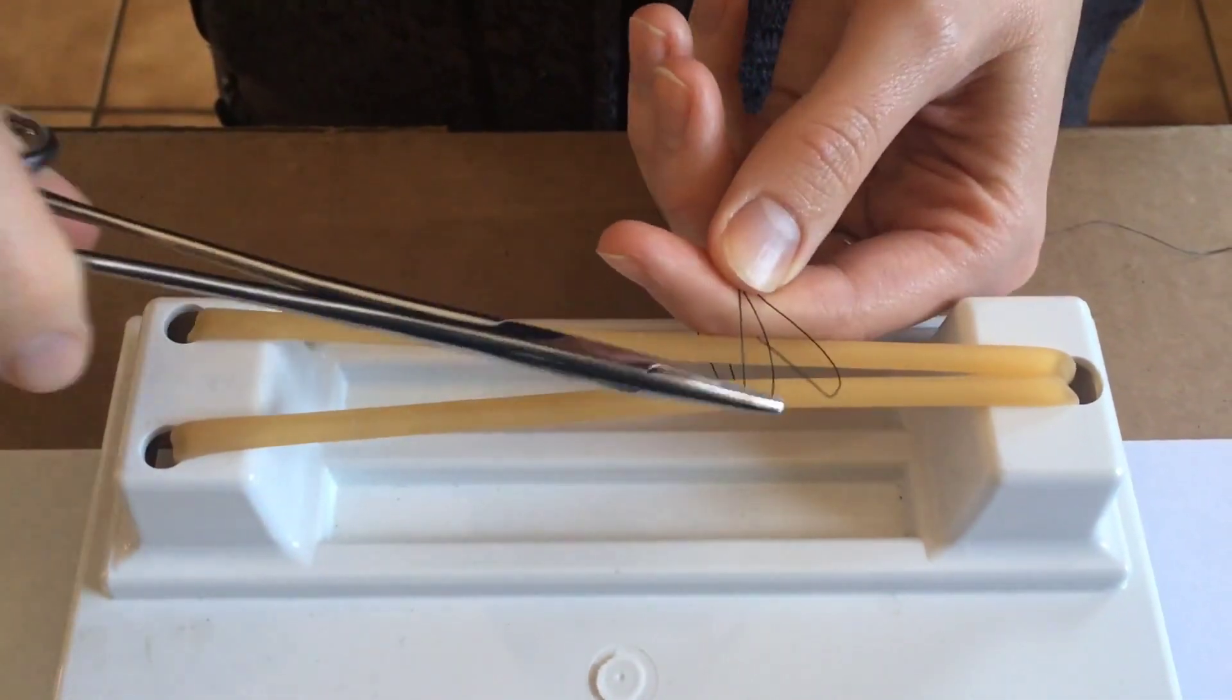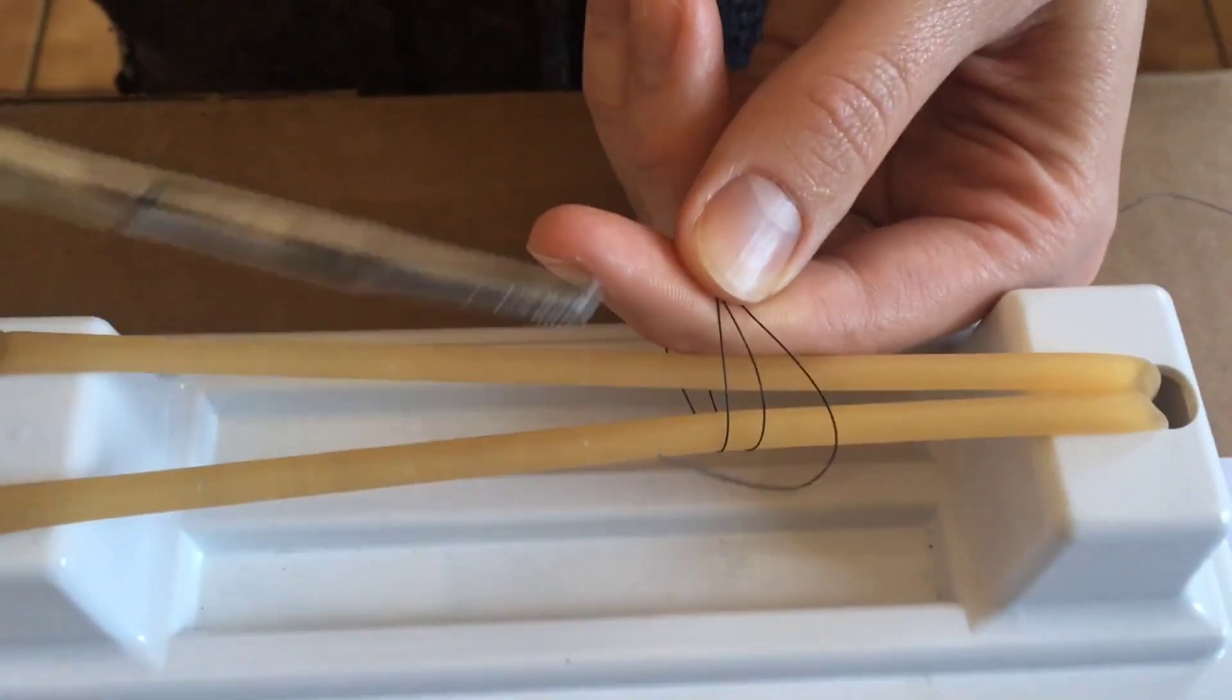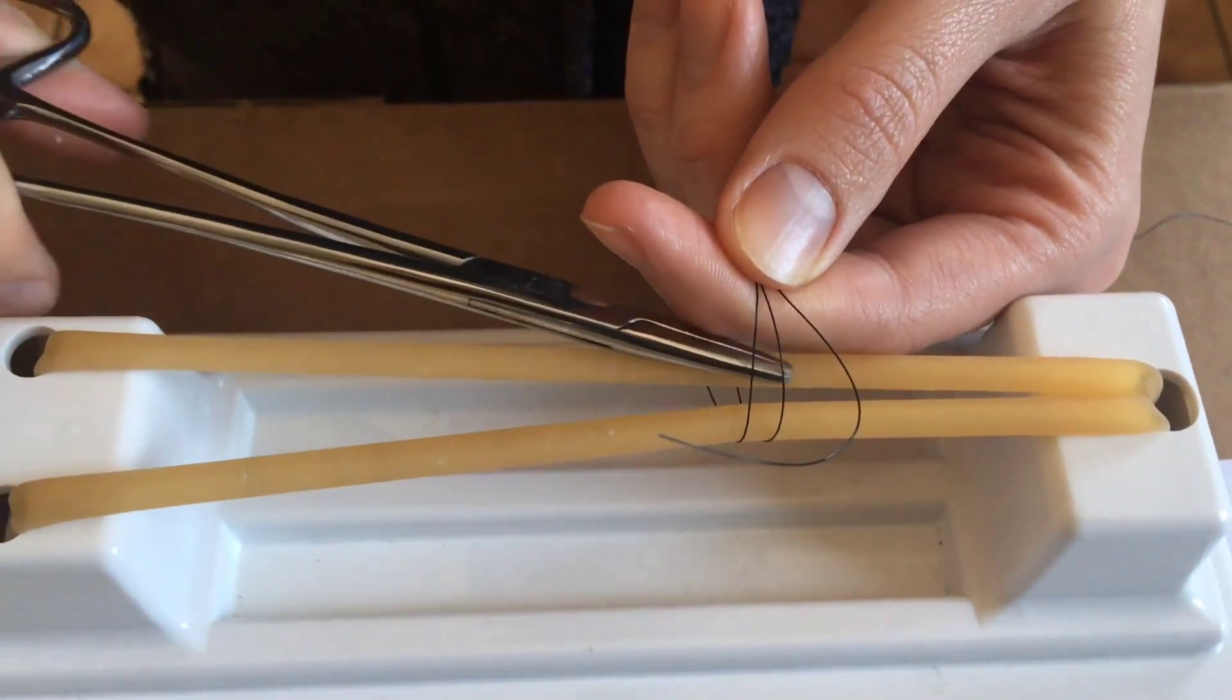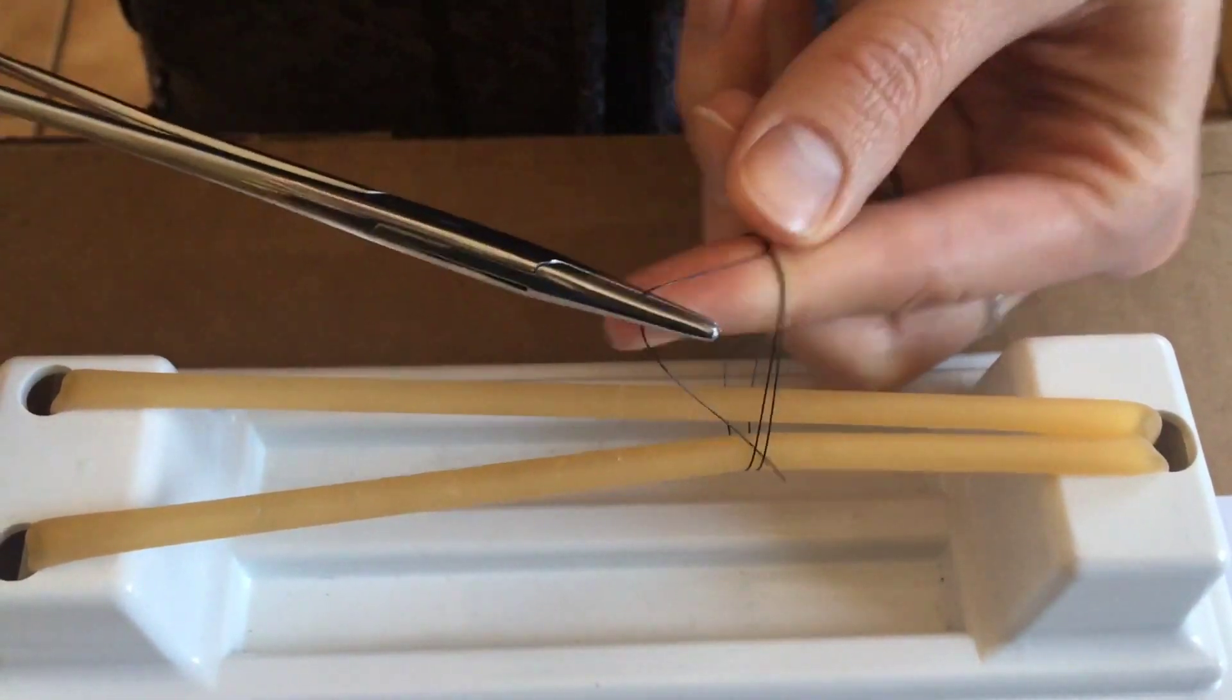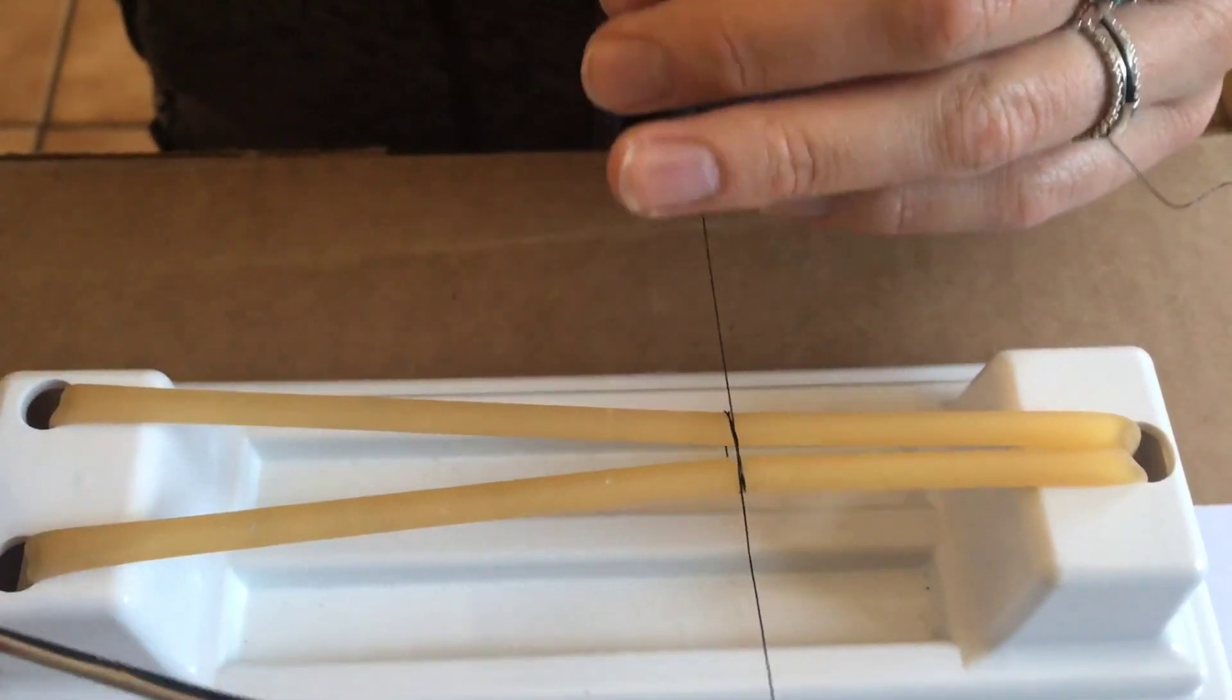Now you have two loops. Stick your needle drivers through these two loops, grab the end of your suture, pull it through, and cinch down.